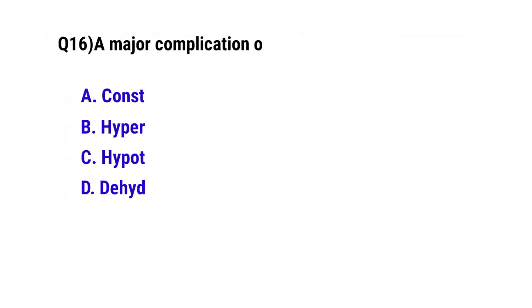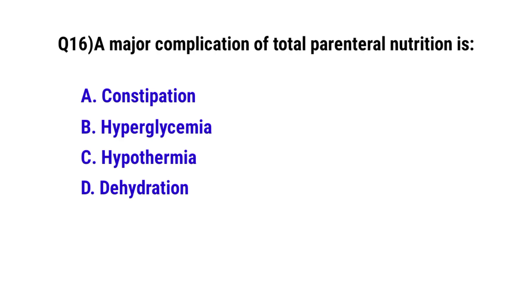Question number 16: A major complication of total parenteral nutrition is? The correct option is B: Hyperglycemia.